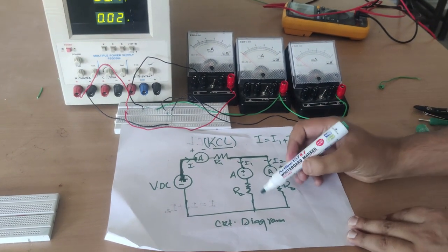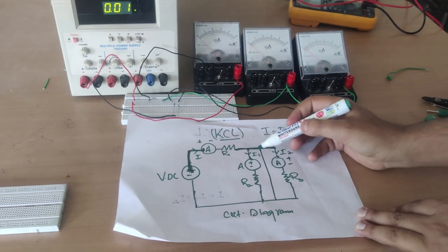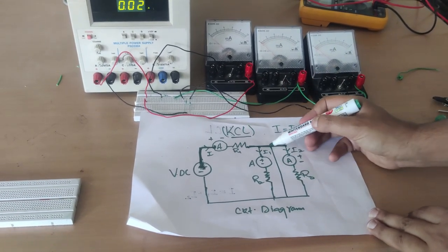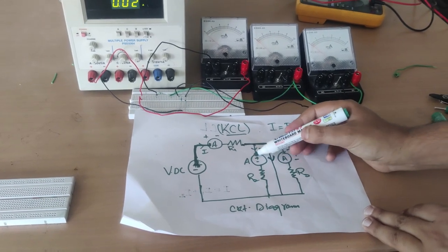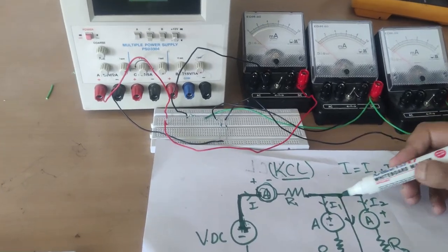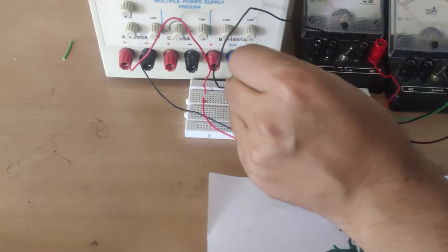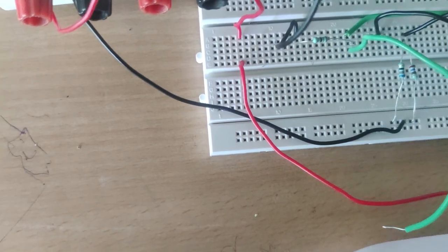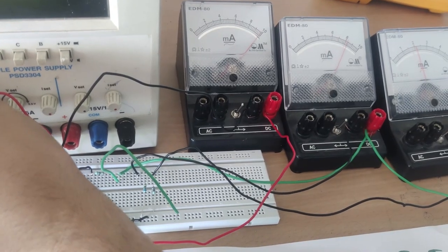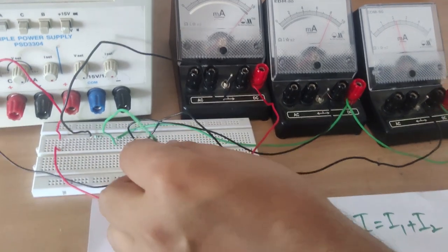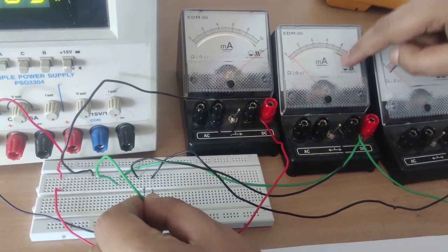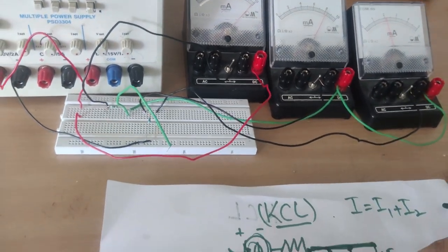Now we will see something interesting. The resistors are connected in parallel. I will connect a short wire between the two parallel branches. As you know, current always tries to flow through the path of least resistance. When the short is connected, all current flows through the wire — the current through the other two ammeters drops to zero, and only the main ammeter shows current. This further verifies how current behaves according to KCL.